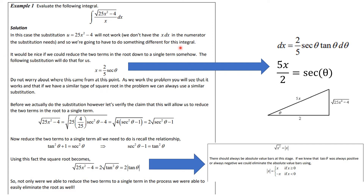So we're going to have to do something else. Do not worry about where this comes from, but follow every step. It would be nice if we could reduce the terms under the radical into a single term somehow, and this substitution will do it. It has several parts: we're going to let x = (2/5) secant θ.